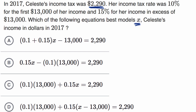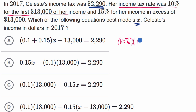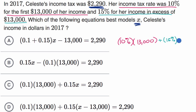They tell us that her income tax rate was 10% for the first $13,000 of her income. So we could say that would be 10% times 13,000 — that's going to be her first $13,000. And then it says 15% for her income in excess of $13,000, so it's going to be plus 15% times her income in excess of $13,000.